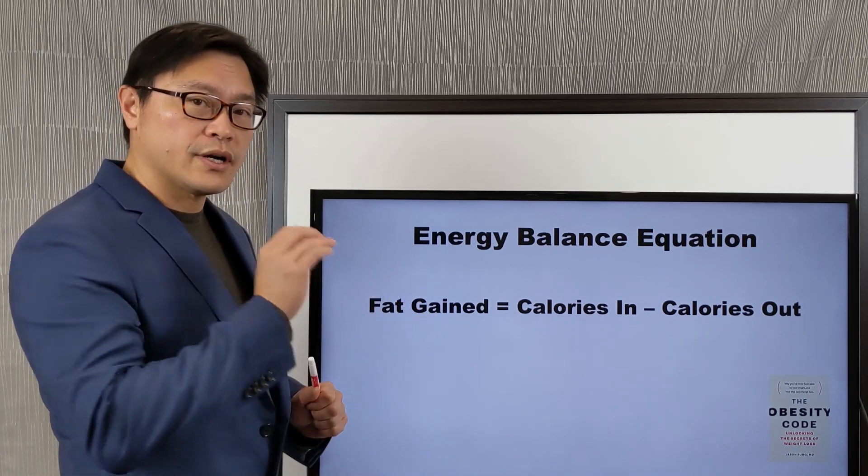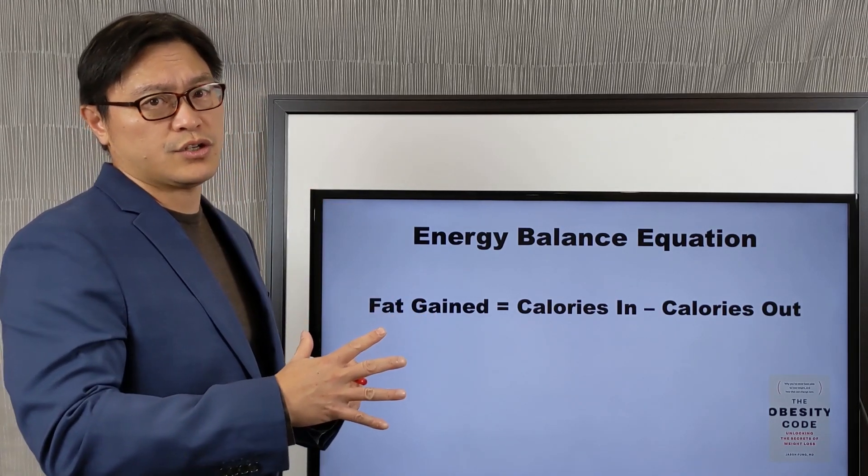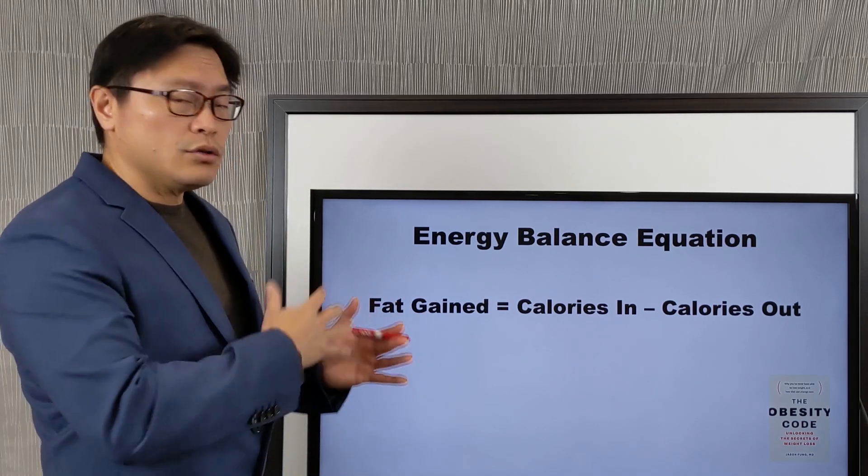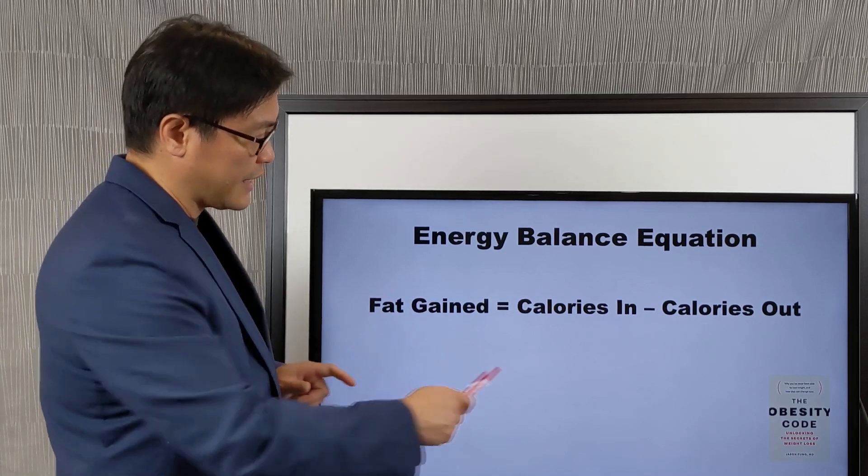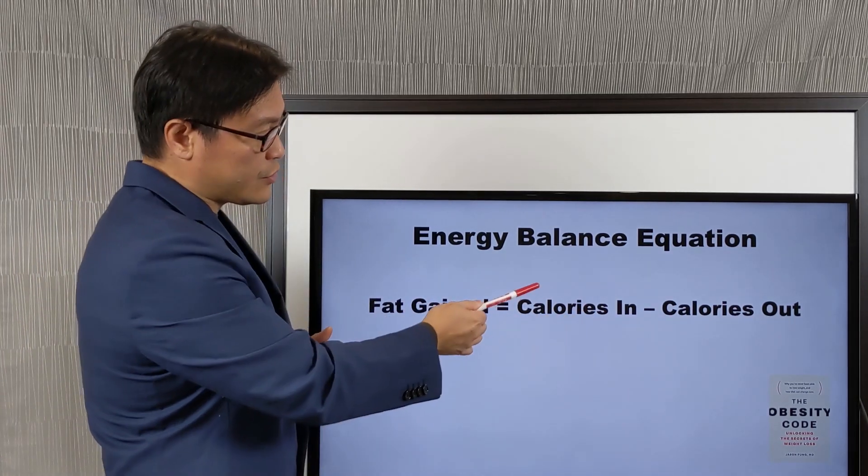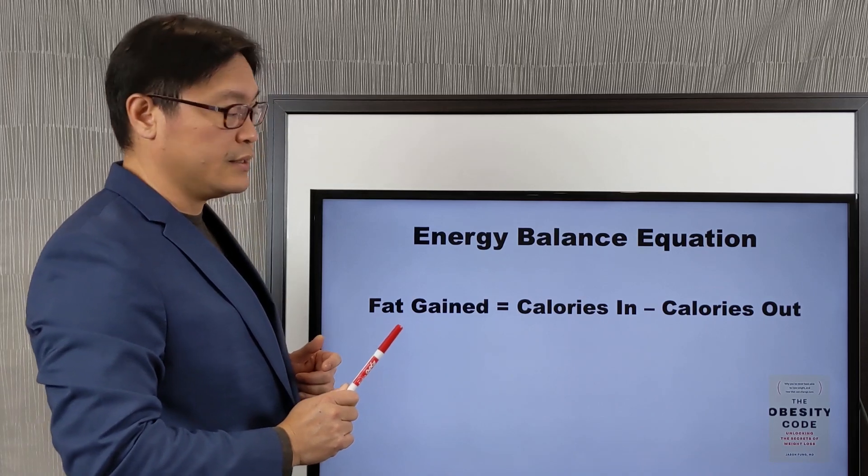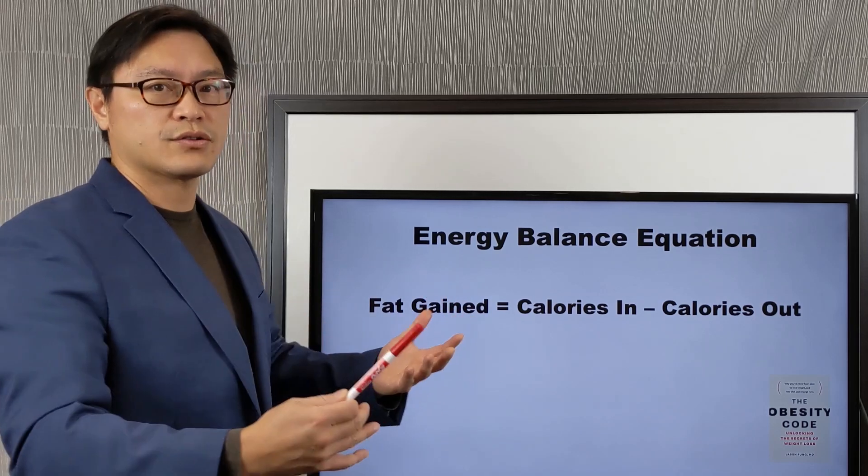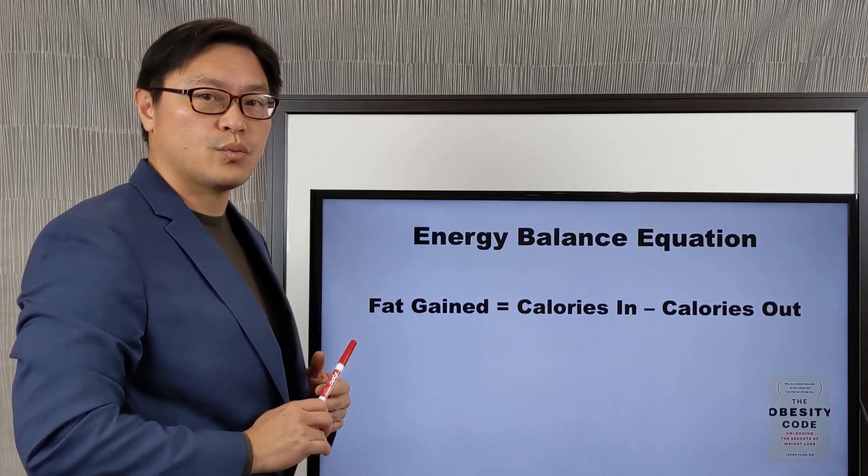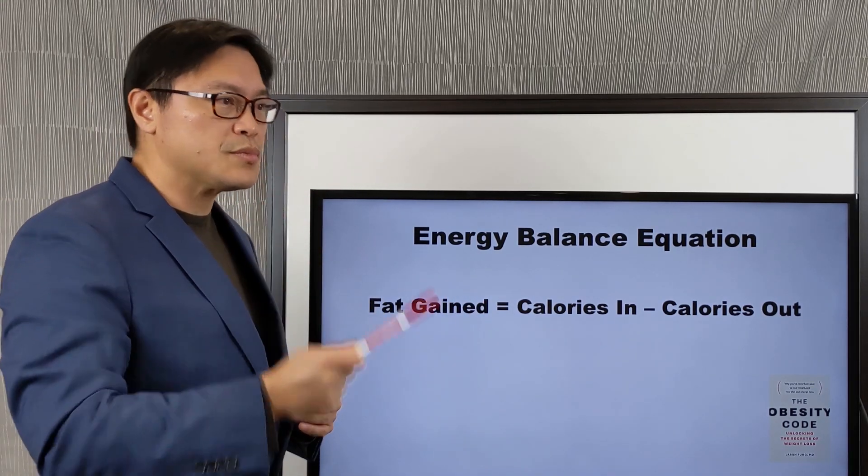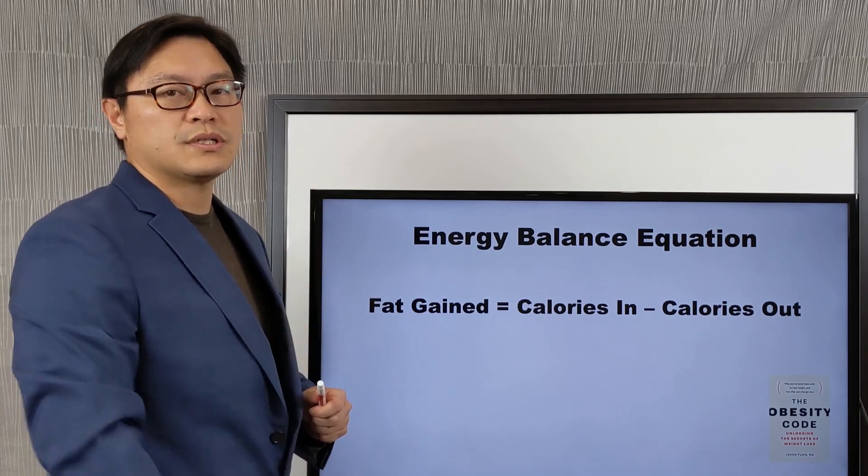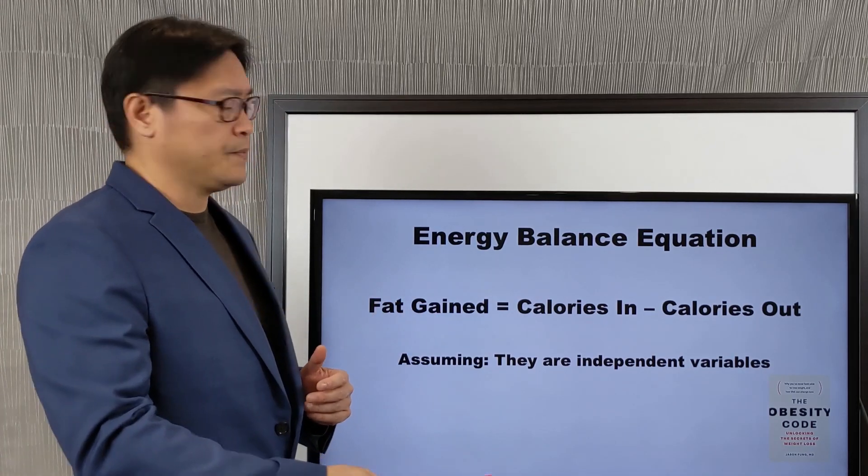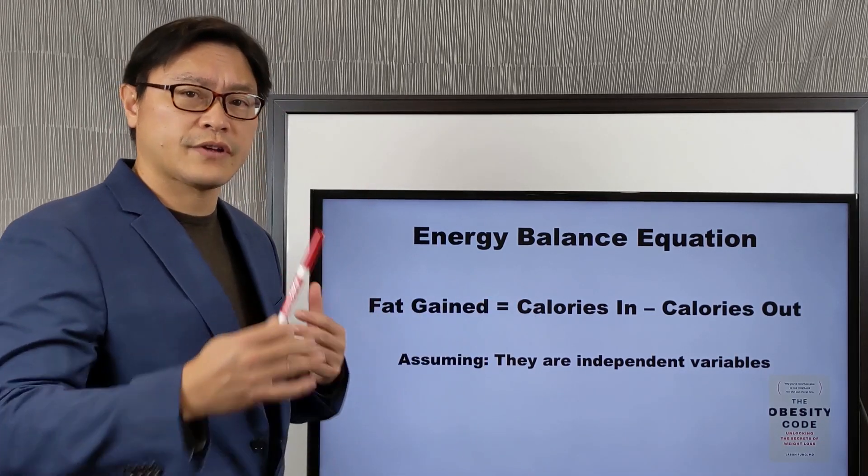When you look at this, there are a number of assumptions within this energy balance equation that make it very hard for you to lose body fat. When you look at this, it seems like calories in minus calories out. All you have to do is either reduce the number of calories in and then you'll lose weight, or you increase the number of calories out, so you increase your exercise, and automatically you'll lose weight. But there's an assumption in here that's embedded that most people don't see. And the assumption is that these are independent variables.